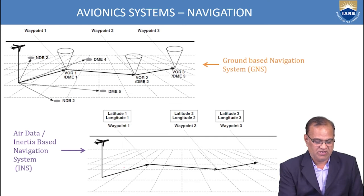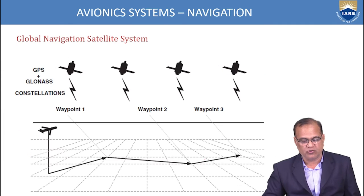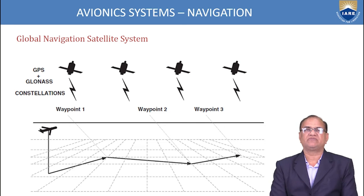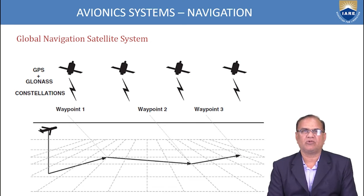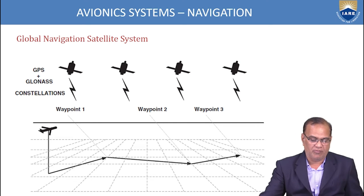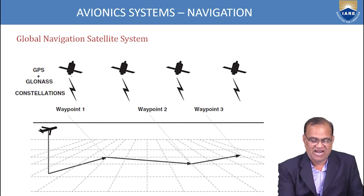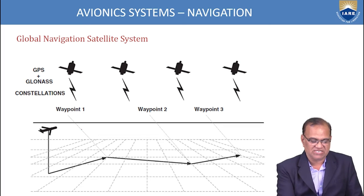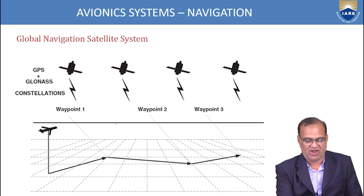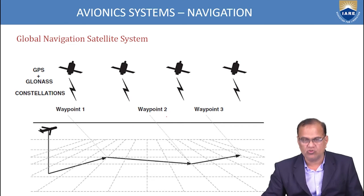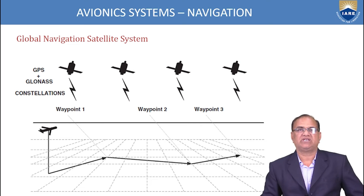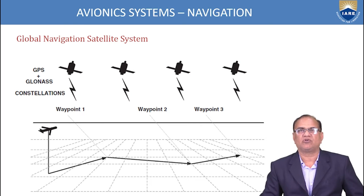We also have the Inertial Navigation System (INS) in which gyroscopes, accelerometers, and other things are used. Next is the Global Positioning System — GPS and GLONASS — with a number of satellites. With respect to each satellite, the aircraft is able to track its line of action, speed, and other parameters.